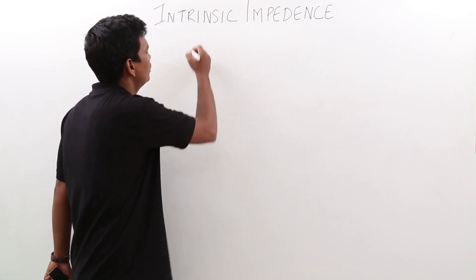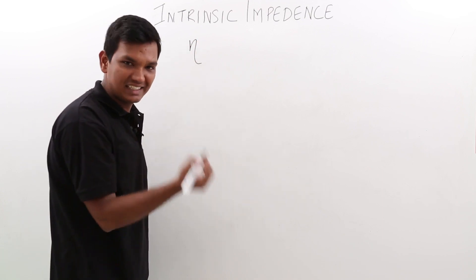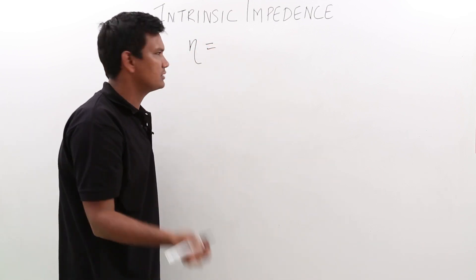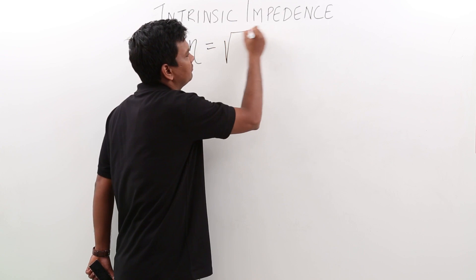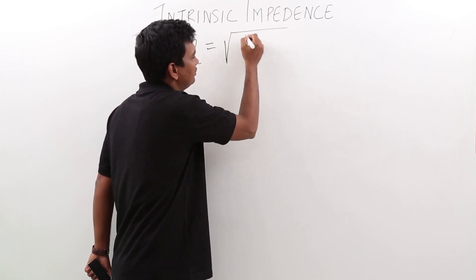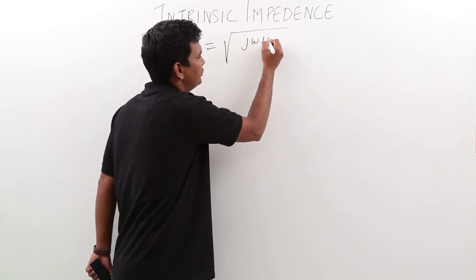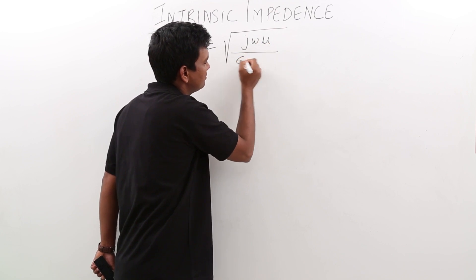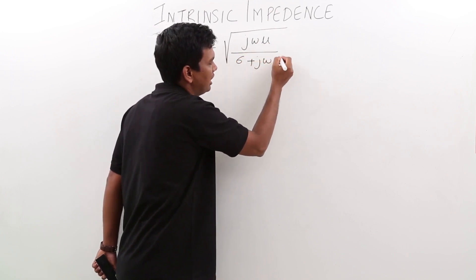Intrinsic impedance is given by the symbol η (eta). For a plane wave, intrinsic impedance is given by this expression: j omega mu divided by sigma plus j omega epsilon.